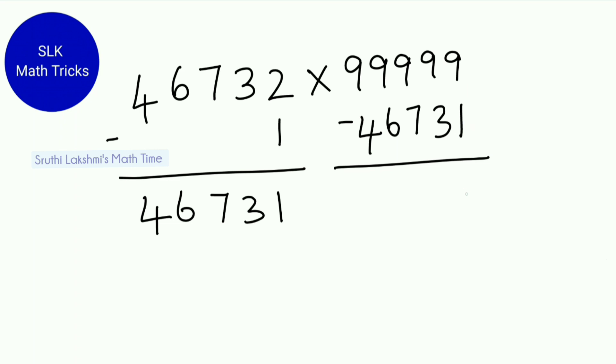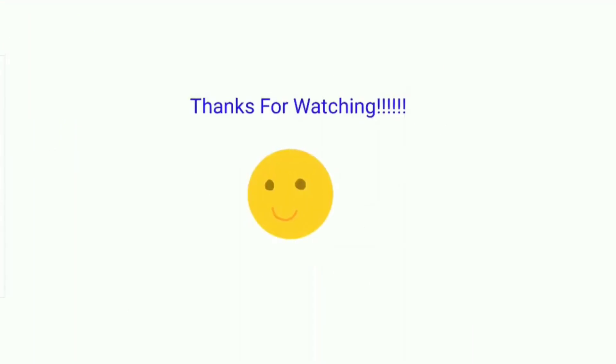So 9 minus 1 is 8, 9 minus 3 is 6, 9 minus 7 is 2, 9 minus 6 is 3, and 9 minus 4 is 5. So 46732 into 99999 is 4, 6, 7, 3, 1, 5, 3, 2, 6, 8. Thanks for watching.